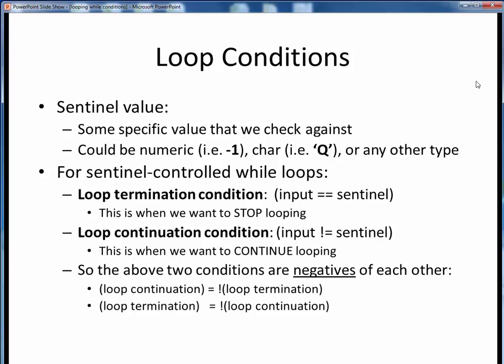Recall that in prior examples, a sentinel value was some specific value that we checked against in our program logic. It could be numeric, a specific character, or in general any other type. It's just some specific, recognizable value that we test against to determine whether or not to continue looping. So, for sentinel-controlled while loops, the loop termination condition would be when some input equals the sentinel value.